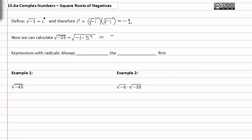and we would get five i when simplified. So, expressions with radicals, remember to always simplify the radical first.